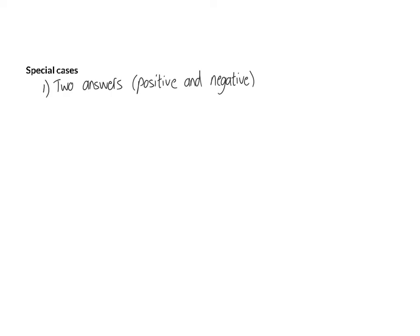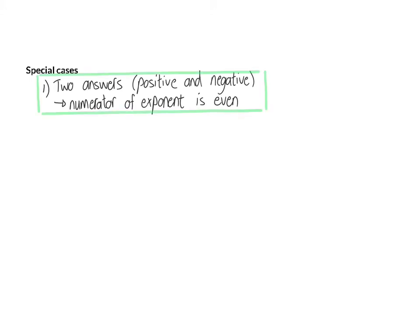There are however two special cases you need to be careful of. The first one is when you can get a positive and negative answer, and this will happen when the numerator of the exponent is even. In this case it is clear to see that the numerator of the exponent is an even number and therefore you need to remember that you will have two possible answers.